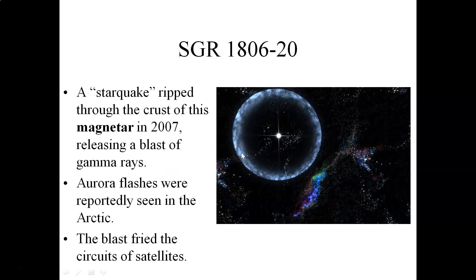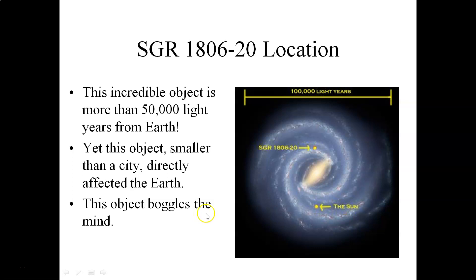There are eyewitness accounts of auroral flashes being seen in the Arctic that coincided exactly with the arrival of the gamma rays coming from this neutron star, and the gamma rays themselves actually fried the circuits of artificial satellites, communication satellites, orbiting the Earth. So this incredible object, just about the size of a city, on the other side of the Milky Way galaxy, was able to directly affect the Earth. That's absolutely astonishing. So here is that magnetar's location here on the other side of the Milky Way. This magnetar is 50,000 light years from us, and yet it could still directly affect the Earth. This object absolutely boggles the mind.